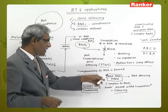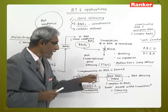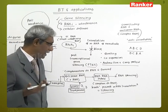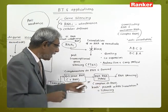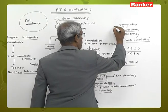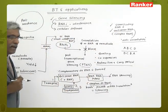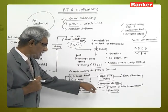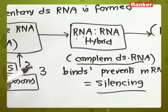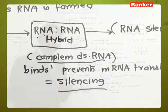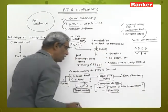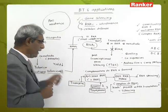In gene silencing, an RNA-RNA hybrid gets formed. When this RNA-RNA hybrid forms, it results in RNA silencing — preventing the mRNA from expression. A complementary double-stranded RNA is formed, made up of a sense or coding RNA and an antisense RNA with anti-orientation. This double-stranded RNA binds and prevents the nematode's mRNA from translation in the tobacco cells — and this is termed as silencing.